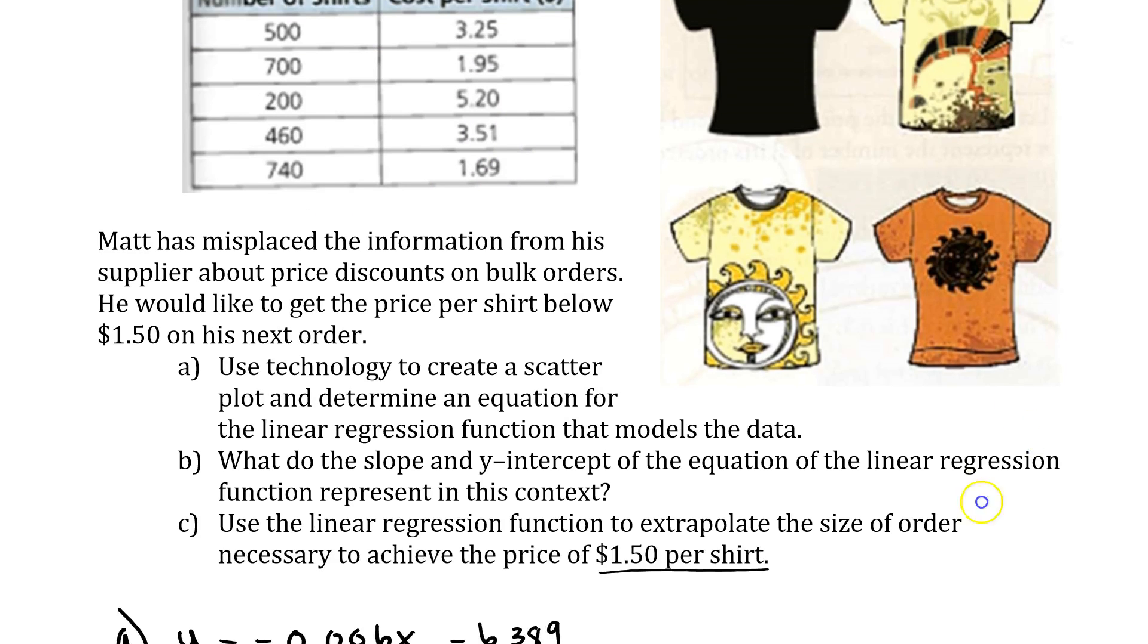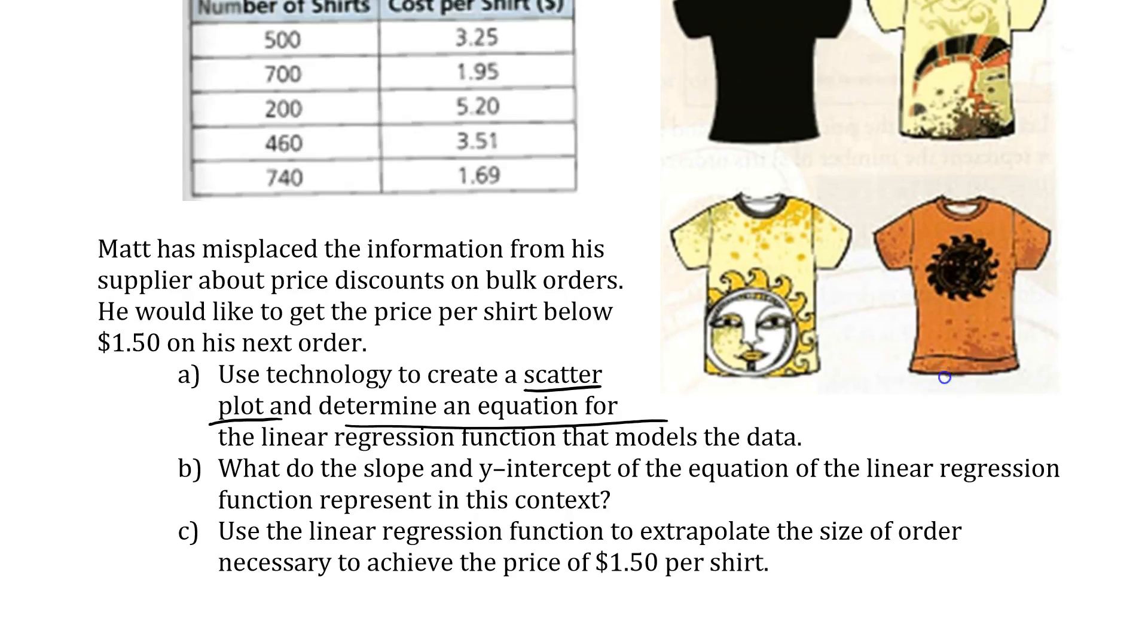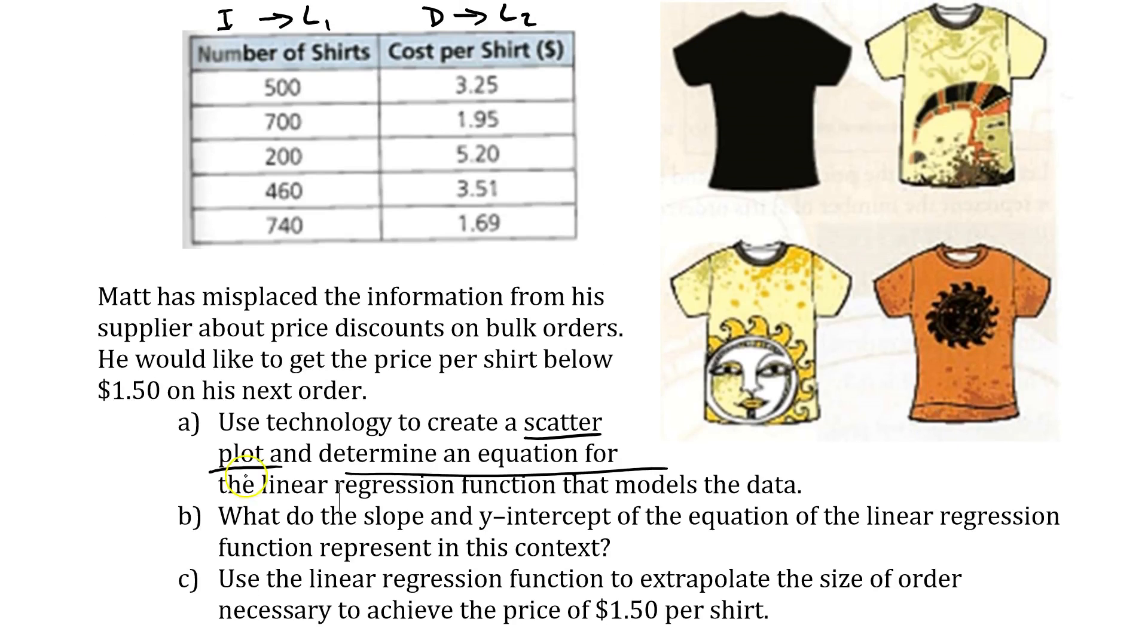Item number one: use technology to create a scatter plot and determine an equation using linear regression function that models this data. Part B: what do the slope and y-intercept of the equation of the linear regression function represent in this context. And use the linear regression function to extrapolate the size of order necessary to achieve a price of $1.50 per shirt. First things first, let's start on A, and we're going to use technology to create a scatter plot.